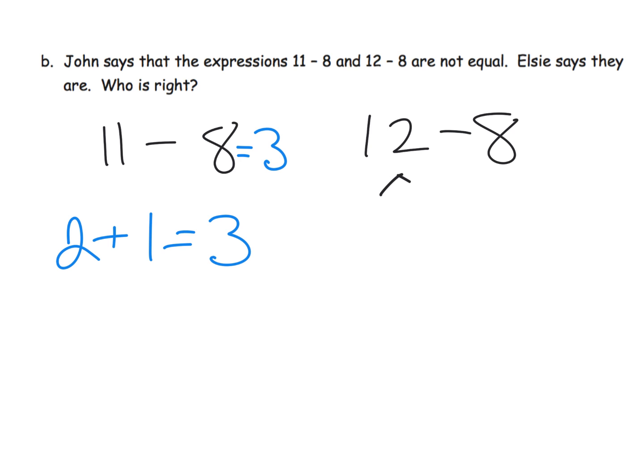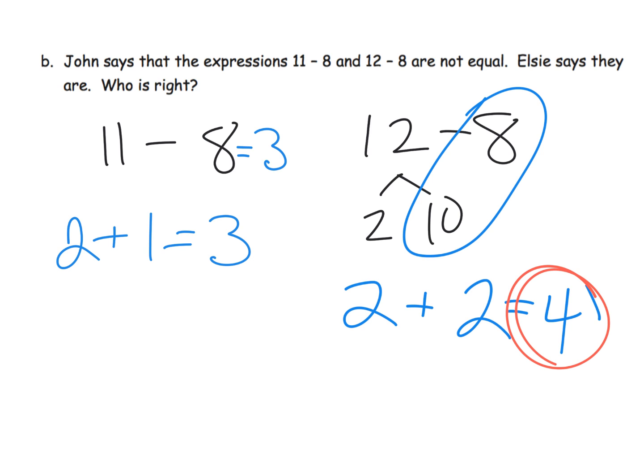12 minus 8, let's do the take from 10 strategy. So I'm going to decompose the 12. I'm going to get 10 minus 8 is 2 plus the original 2. I get 4. So I've got 4 over here. I've got 3 over here. So they are definitely not equal.